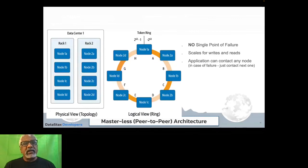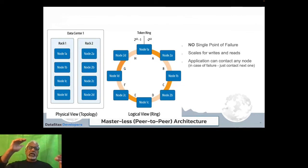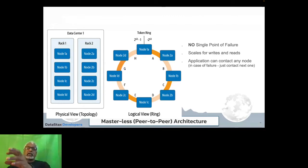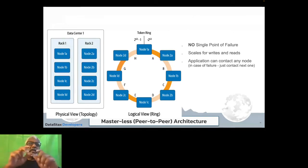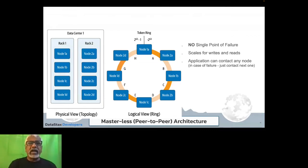Cassandra uses a ring-like architecture. The oversimplified way of looking at it is that it takes data, uses something called a partition key, and hashes the partition key into a particular node in this ring of nodes. When you add or subtract nodes, the system takes care of all of that. Think of it as a distributed hash table — the platform handles failures, eliminates hot partitions, and manages nodes coming up and going down automatically.